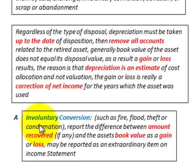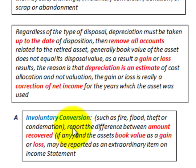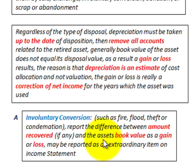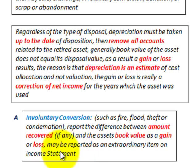We'll start with our first example, where we have an involuntary conversion such as a fire, flood, theft, or condemnation. You report the difference between the amount recovered, if any, and the asset's book value as either a gain or a loss. It may be reported as an extraordinary item on our income statement.